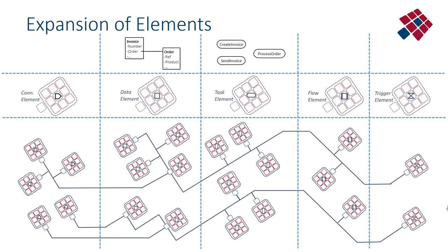Represented schematically: at the top you see a number of functional entities — functional data entities like invoice and order, and functional action or task entities like creation of an invoice, processing of an order, sending of an invoice. Then you have template structures for the various types of elements: data elements, task elements, flow elements, connector elements, and trigger elements. The software code base at the lower end consists of a number of instantiations of these element templates — recurrent structures implementing these various elements.